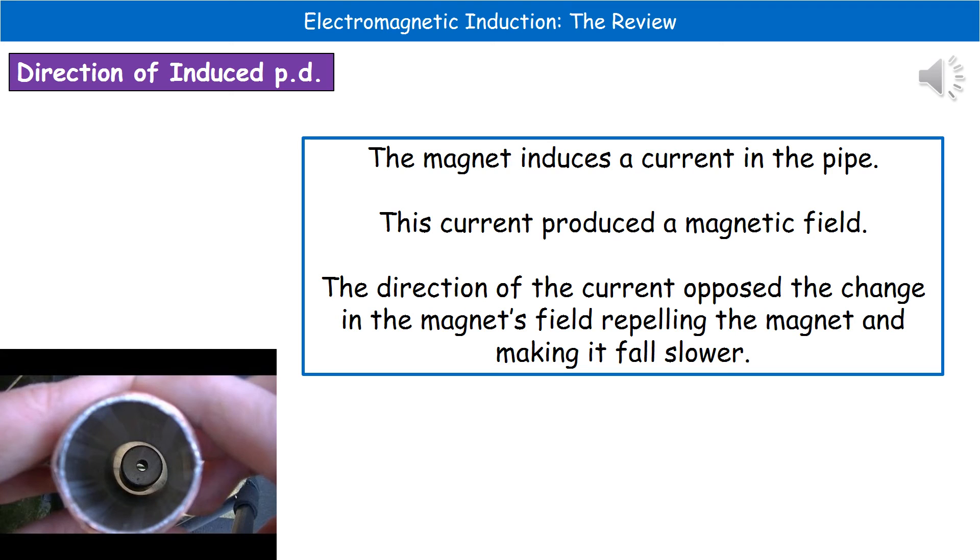Now, the reason for this is that as that magnet moves down the pipe, which is a conductor, then it induces a current to flow through it. Because the current produces a magnetic field and we're producing a magnetic field within an existing one, then what we see is we get a force and that force acts on our magnet and it means that the magnet falls much slower.